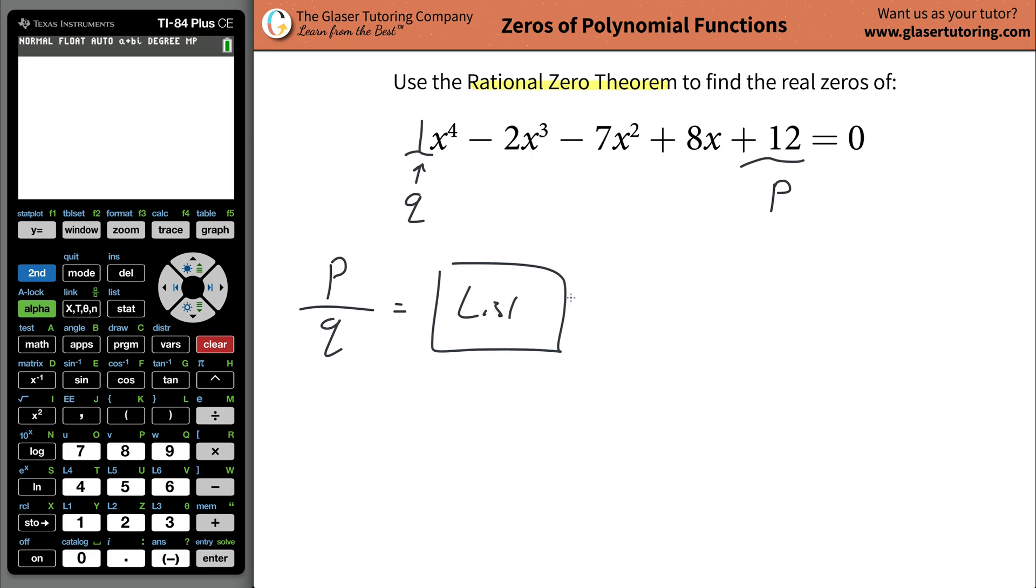Now, what are the factors of 12? And remember, factors are going to be whole numbers that multiply to give you a value of 12. So obviously it's going to be one and 12, then two and six, and then three and four. Now, each of these comes with a plus and minus, because you can take the two positives and multiply them together or the two negatives.